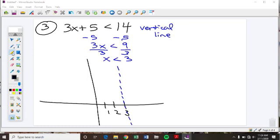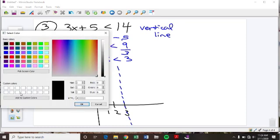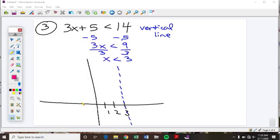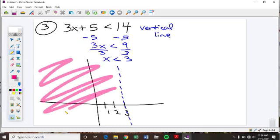And because it is less than, I'm going to shade to the left of that vertical line. But I'm still shading the big area like that.